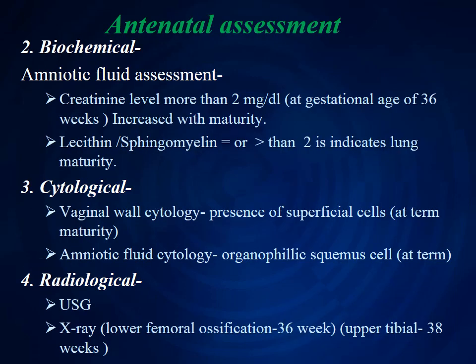Next, some biochemical assessment in which amniotic fluid assessment is done. The first is creatinine level, which is more than 2 mg per dl at gestational age of 36 weeks — it increases with maturity. Next, the lecithin and sphingomyelin ratio should be equal to or more than 2, which indicates lung maturity.